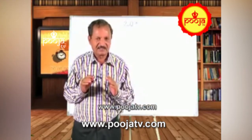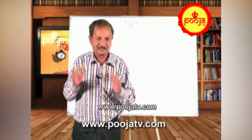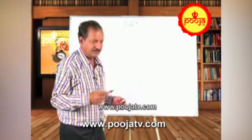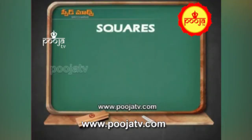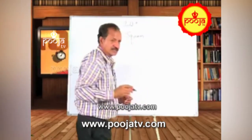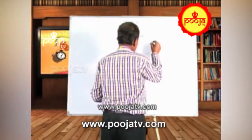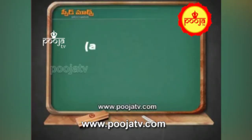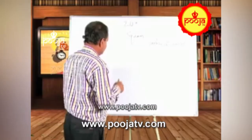Now I will explain the squares. After that, I will tell you the square roots. Let us go for squares. As all of us know the formula: A plus B whole square equals A square plus 2AB plus B square.